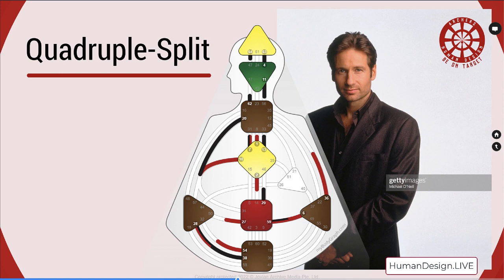More often than not, quads get along with people who have a lot of openness. Why? Because this is the process of assimilation that is more about their own personal experience. It's subjective.